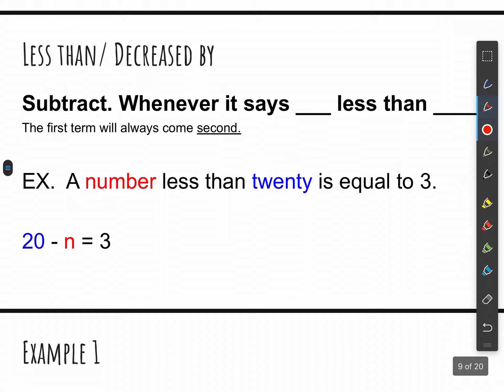Let's look at the less than and decreased by. So we subtract whenever it says blank less than something else. A number less than 20 is equal to 3. So a number less than 20. If it says less than like that, then we start with 20, because it's some number that's less than that. So we'd say 20 minus that number equals 3. So it's important to know the difference in all of these.